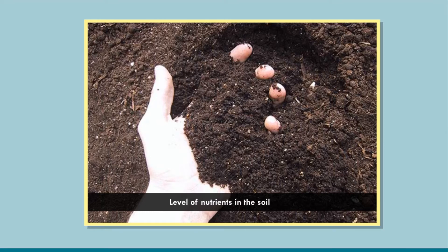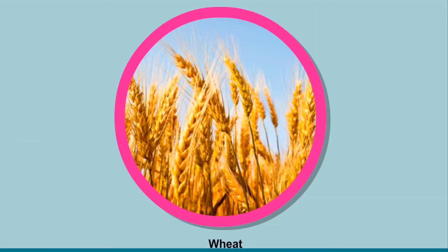After growing many crops in the same field, the level of nutrients in the soil decreases. The use of manure improves the soil texture and also its water-retaining capacity. Another method for replenishing soil nutrients is crop rotation. In crop rotation, two or more crops are grown on the same land alternately. For example, after growing wheat, the soil is low on nitrogen. This can be remedied by growing peas or gram plants, which replenish the soil with nitrogen nutrients.